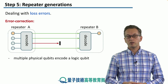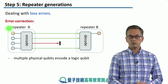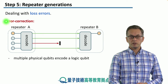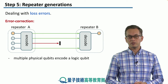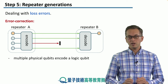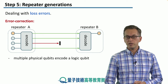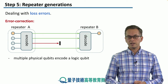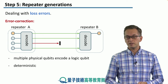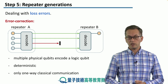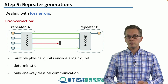Another way to deal with loss errors is via error correction — this is a more complicated scheme. Repeater A has more resources: it has the original qubit and a bunch of other qubits, and it uses these to encode the state of the system into a multi-qubit state. It then sends all of these physical qubits to repeater B. The quantum error correction code is designed such that even if some physical qubits get lost along the way, repeater B is still able to decode the received state and recover the original message. The advantage of this approach is that it is deterministic and does not require two-way classical communication — the communication only goes from A to B, so once B decodes the message, it can proceed immediately.